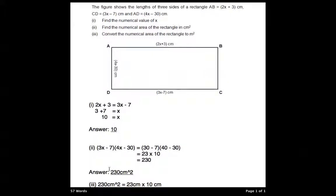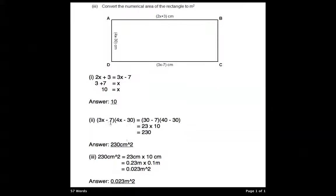Now we finish part 3. Part 3 says convert the numerical area of the rectangle to meter squared. Since we know that the answer is in cm squared, we just have to do one more step to make it to meter squared.